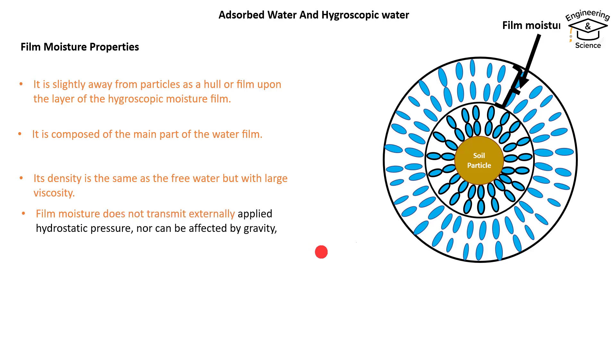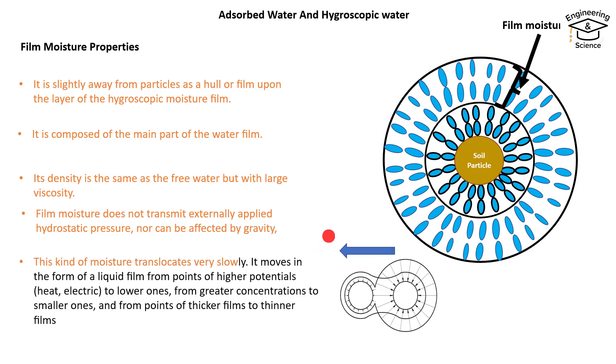Film moisture does not transmit externally applied hydrostatic pressure nor can be affected by gravity. This kind of moisture translocates very slowly.